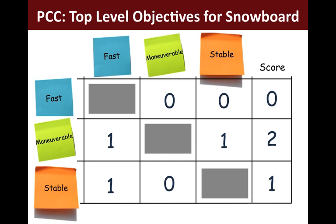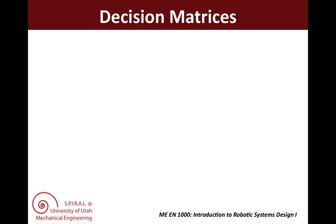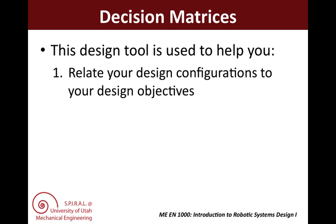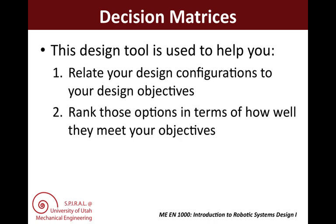Using the PCC allowed us as a team to rank our objectives, and you'll also use it to rank your functions. What about making decisions about design configurations that you have developed? Design matrices are another design tool, and are used to help you relate your design configurations to your ranked design objectives. We use the decision matrix to rank the design configurations in terms of how well they meet the objectives.